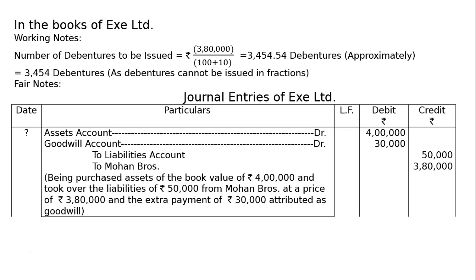According to the agreement, the purchase consideration is Rs. 3,80,000. The net assets taken over (assets Rs. 4,00,000 minus liabilities Rs. 50,000) amount to Rs. 3,50,000. We are paying Rs. 30,000 more, which is attributable to goodwill. Hence, goodwill account is debited Rs. 30,000.